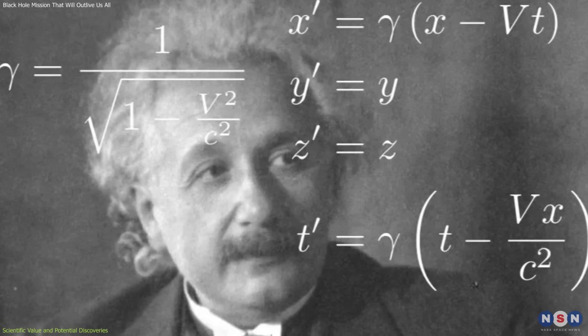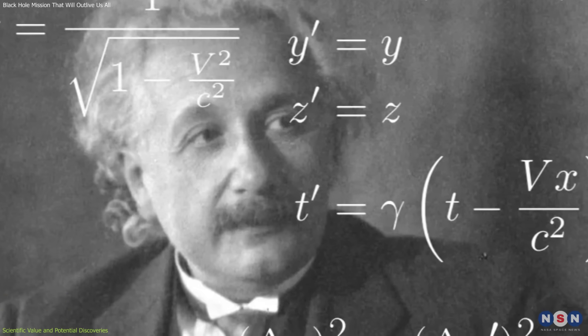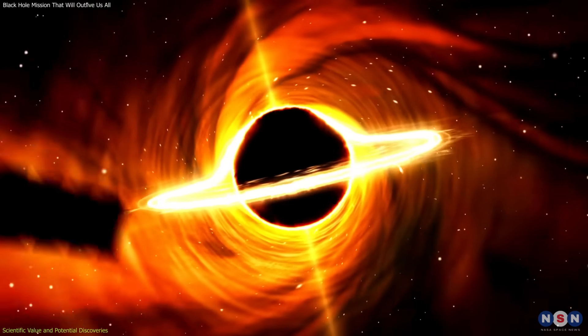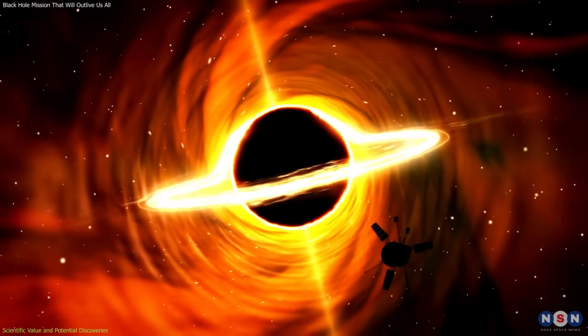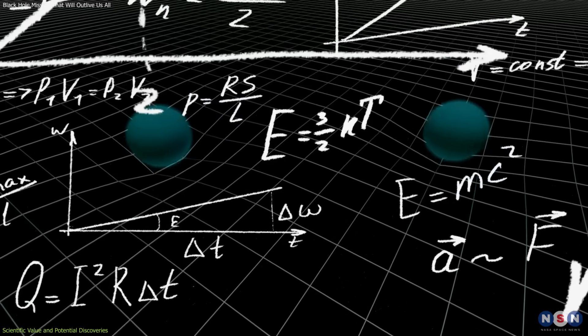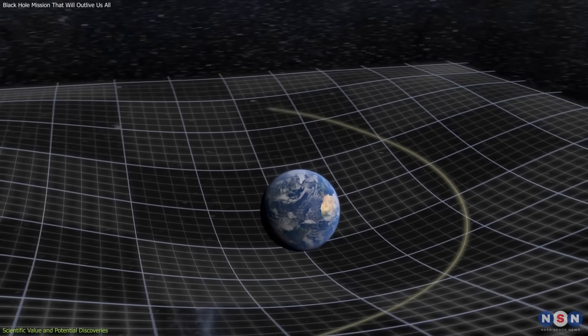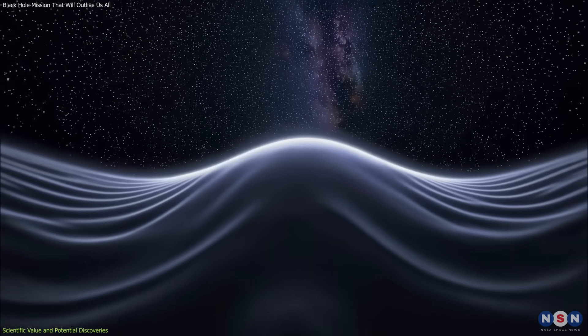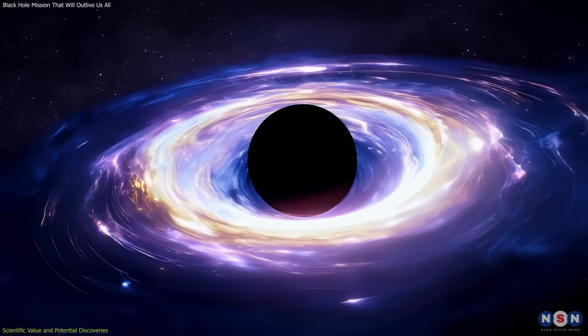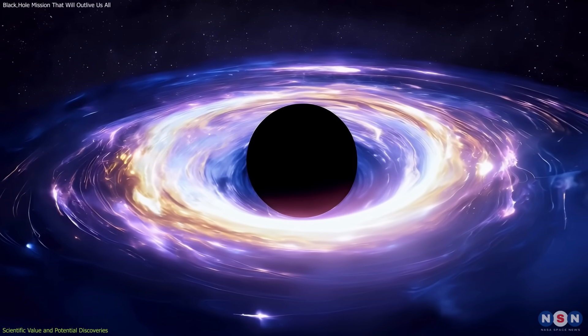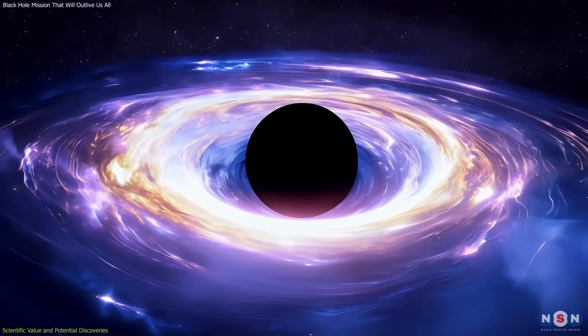Another aim is to test Einstein's theory of general relativity under conditions far more extreme than those observed so far. While the theory has passed every test, from planetary motion to gravitational wave detection, the intense curvature near a black hole could expose effects or deviations we've never seen.